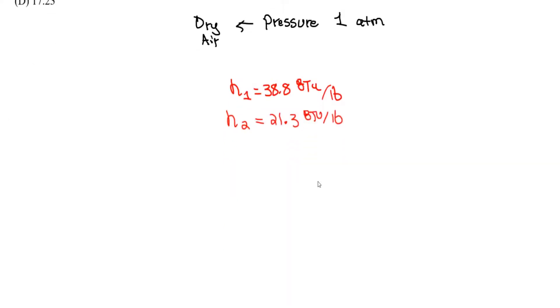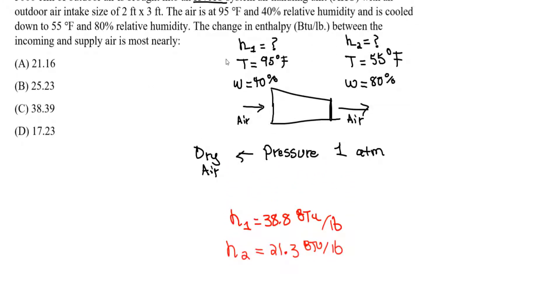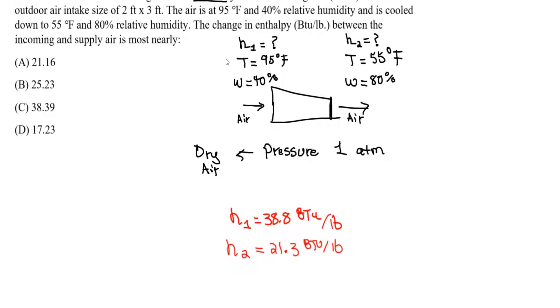So the difference between these is going to be our answer, our change in enthalpy between the incoming and supplied air. So let me do the math here, 38.8 minus 21.3, I got around 17.5. So this is obviously closer to answer D, and these are all out. It's a lot closer to answer D, and you can probably get a closer answer if you use it on paper instead of using the PDF, but this is how you use the chart, and on your exam, you're going to have to use the PDF, so I doubt you will have answers that are very close to each other. So this is our closest answer, and this is how you use the chart to find the change in enthalpy between the incoming and supplied air. Thank you.